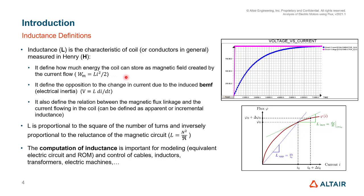Another definition is that inductance defines the opposition to the change of current — the induced back EMF in the coil. If you apply a step voltage to your coil, the current will not follow that voltage immediately; there will be some transient with a specific time constant. You can think of inductance as the electrical inertia of the system — the more inductance the coil has, the more time it takes for the current to reach steady state.